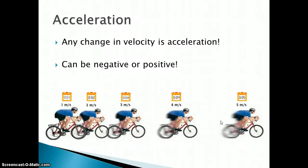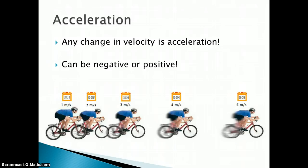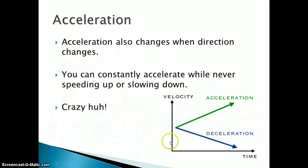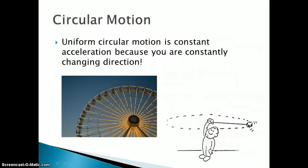The next part is acceleration. Acceleration is any change in velocity — no matter what it is, any change in velocity is considered to be acceleration, and it can be negative or positive. Notice that the bike rider is accelerating at 1 meter per second each second, going faster and faster. Since acceleration involves velocity, it changes with direction. So you can constantly accelerate while never really speeding up or slowing down, as long as you change directions. We see that a lot in circular motion — if it's uniform circular motion, you're going round and round, constantly changing direction, so you are constantly accelerating. The Ferris wheel is another example of that.